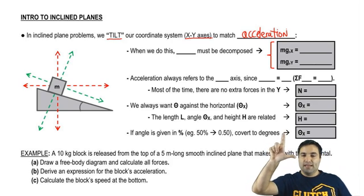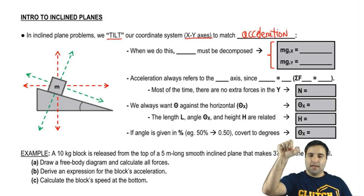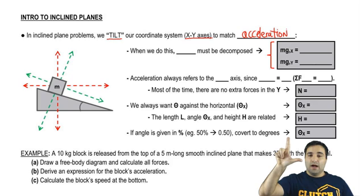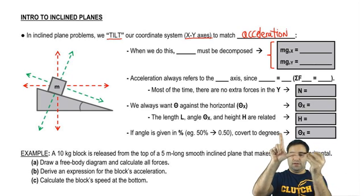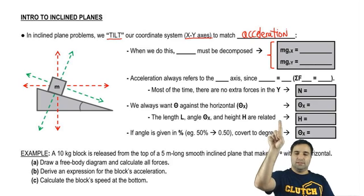So typically x, y is like this, right? Y axis here, x axis here on the horizontal, and we do this because our objects are usually moving in this direction in the x axis or in the y axis.